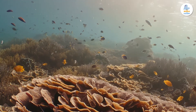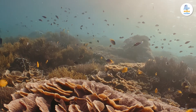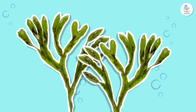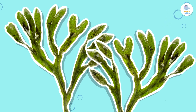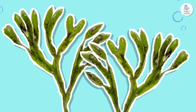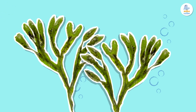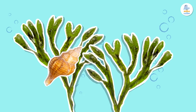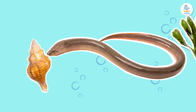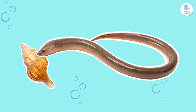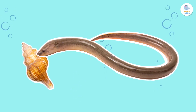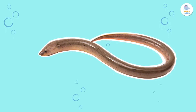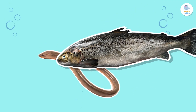In the ocean we can find many producers, such as these algae. As we know, algae are plants that get energy through photosynthesis. But oh no — sea snails like them too! Now a hungry eel comes swimming along, sees the snail, and eats it. But then a salmon enters the picture and eats the eel.